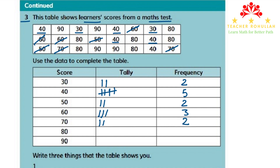To find how many students scored 80, we look for 80 across all rows. We find 1, then 1 more making 2, then 3, then 4, then 5, and the last one makes 6. So 6 students scored 80.